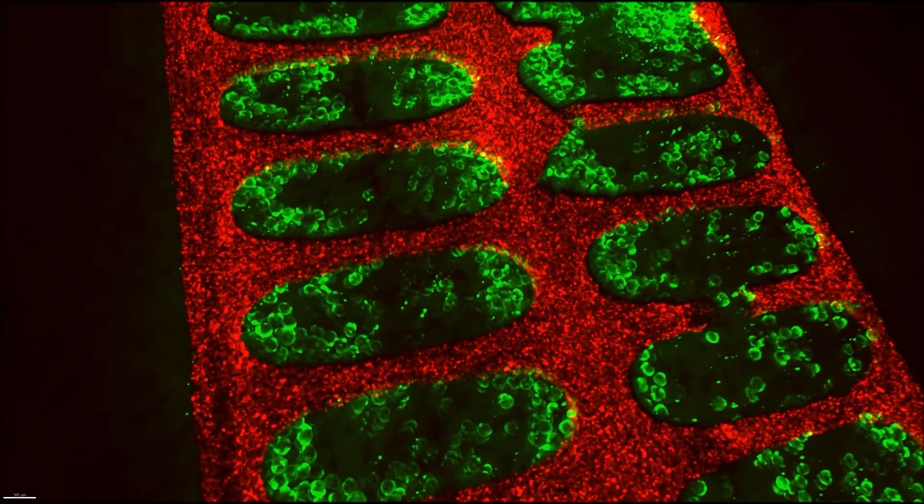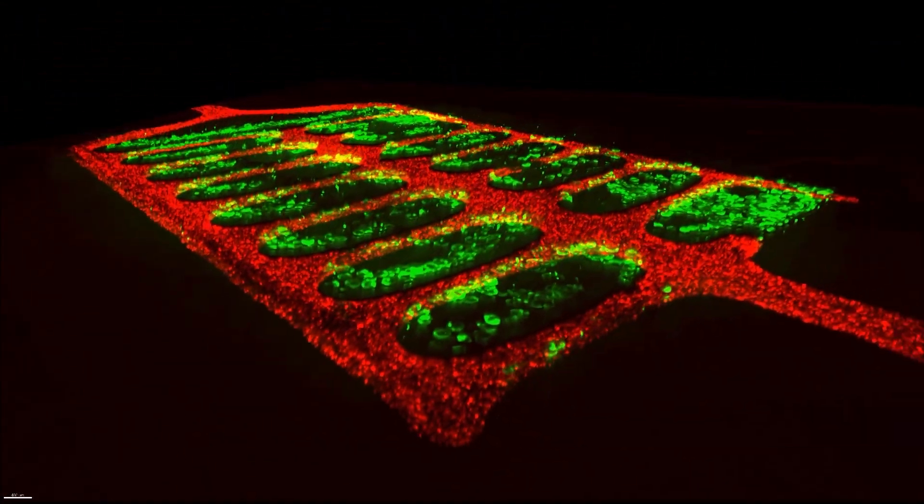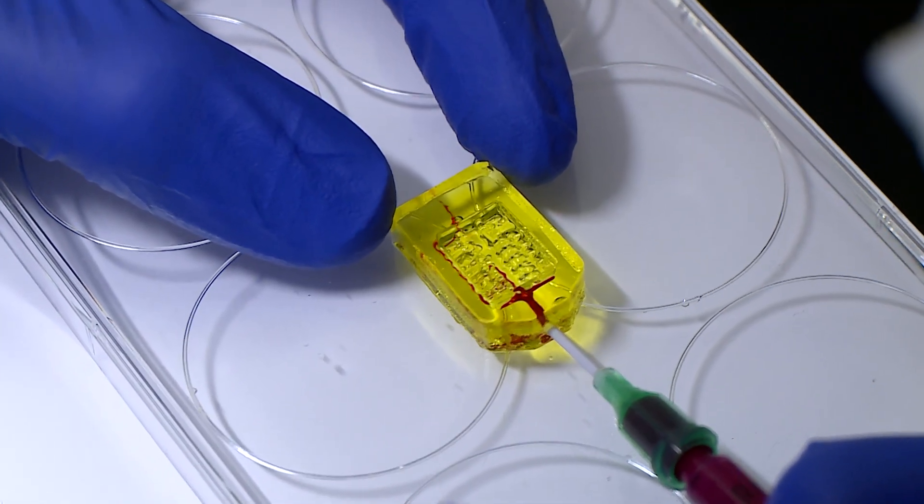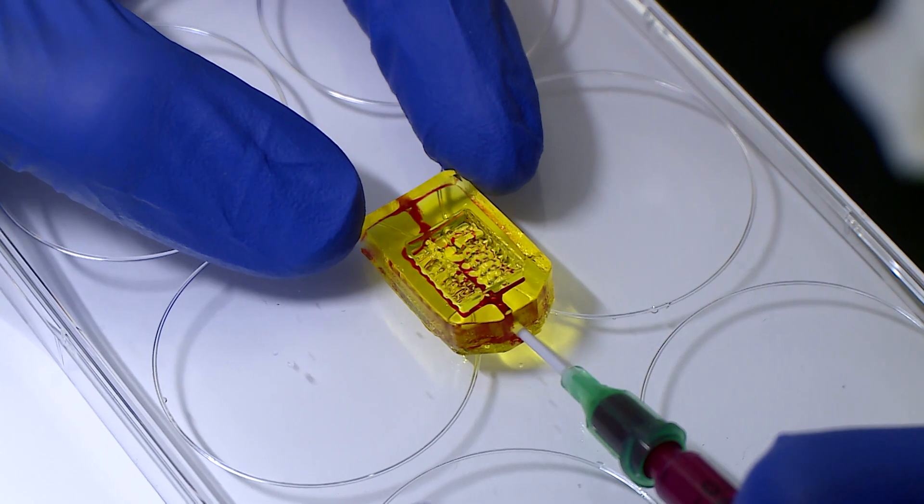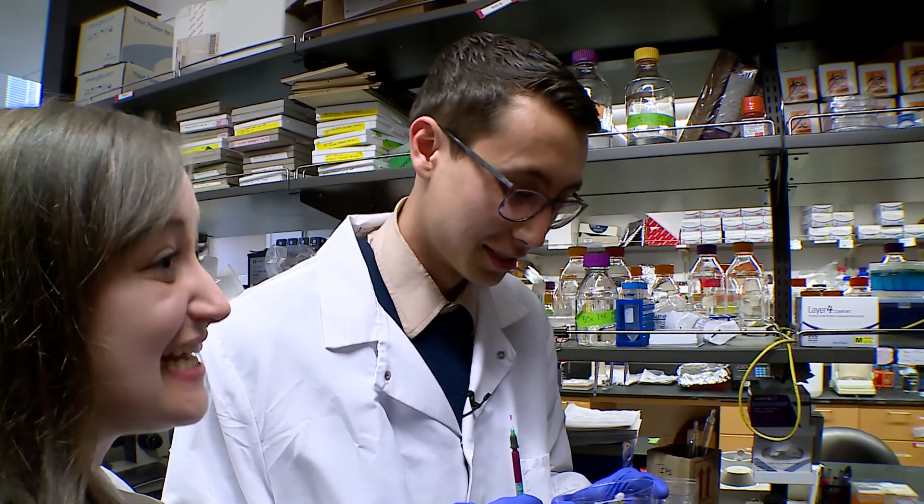All we did was tweak the chemistry that people have been using for decades in the tissue engineering and regenerative medicine community by adding a food dye. That simple tweak in the chemistry enabled us to 3D print living human tissues that have really extraordinary structural complexity compared to what the field has been able to do previously.